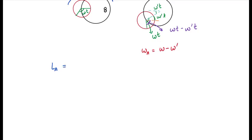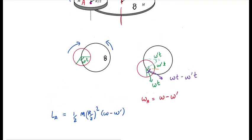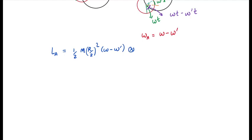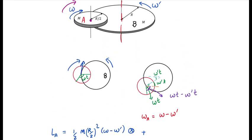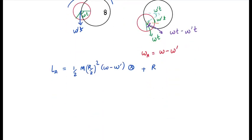One angular momentum component is half m times r by 2 squared. The angular velocity with respect to ground is omega minus omega prime. The direction will go into the board with the right hand thumb rule, so I put into the board sign. This is for center of mass translation motion in this direction with velocity omega prime r. So center of mass angular momentum is R cross M V_CM. So R is this, M is this, and V_CM is omega prime r. This direction is out of the board.